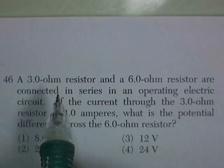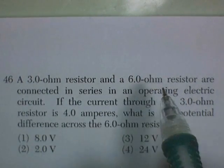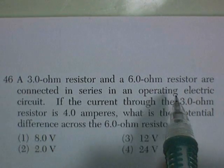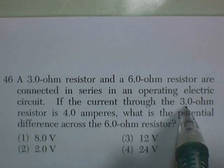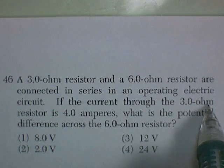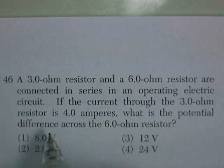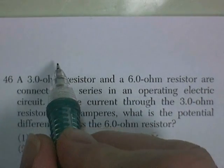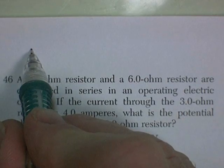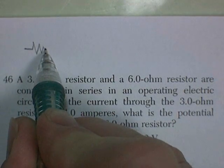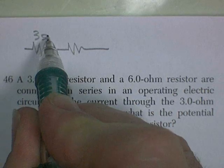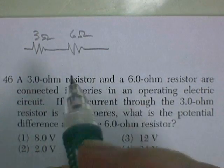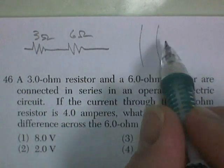Question 46, a 3 ohm resistor and a 6 ohm resistor are connected in series to an operating electric circuit. The current through the 3 ohm resistor is 4 amps. What's the potential difference across this 6 ohm resistor? Now, there's a lot of ways to do this, but I like a little sketch. 3 ohms, 6 ohms, and maybe a little data grid.